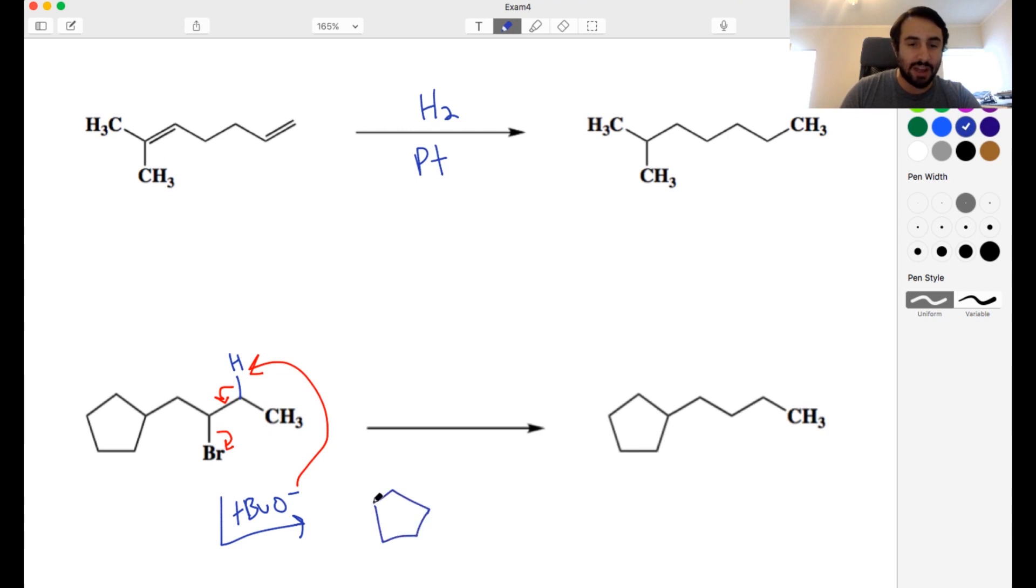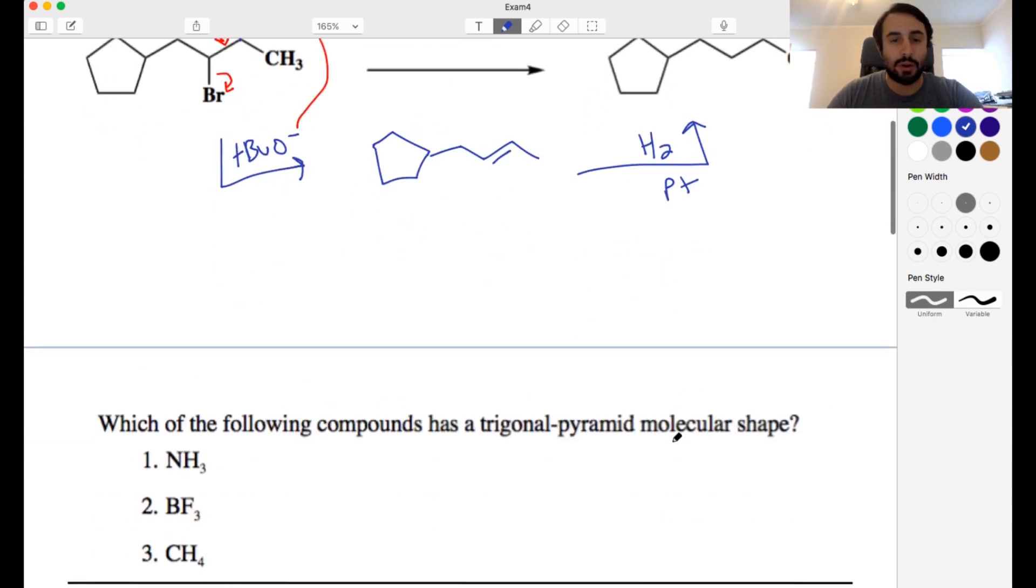So let's go ahead and draw our elimination product. And of course there are two possible elimination products, we could have gotten that double bond over there but it actually doesn't really matter because now we can just do what we did before. Let's hydrogenate over platinum metal again and get rid of that pi bond and we'll get the alkane. So that's one way you could have done it. It seems to me to be the most straightforward way to do it: eliminate, hydrogenation. That's pretty straightforward. So those are two quick ones there.